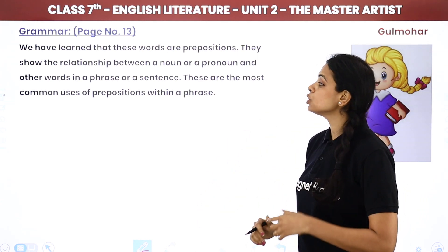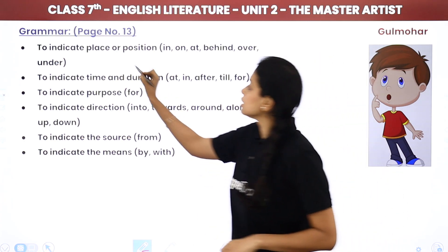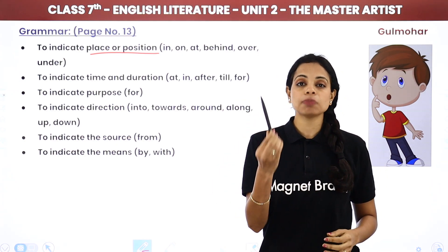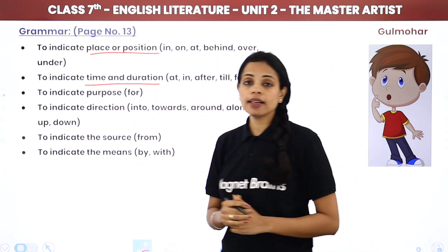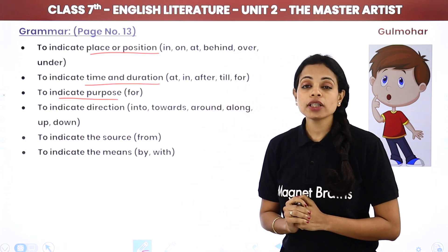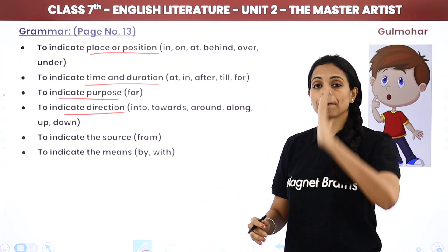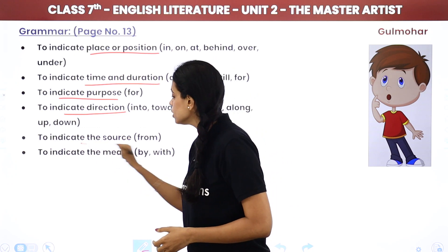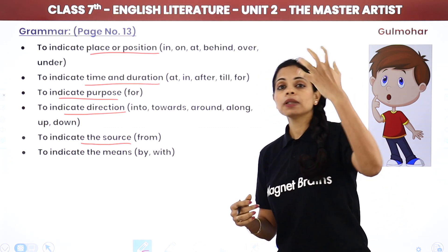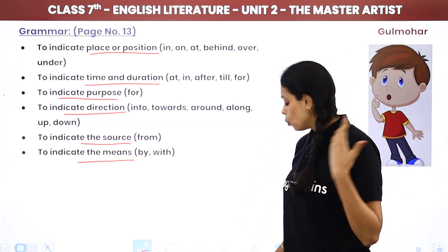The most common uses of prepositions are: to show place or position — such as 'in my hand' or 'on my hand'; to show time or duration — such as 'at nine o'clock' or 'on the ninth of November'; to show purpose — such as 'I cannot come for I have my exams'; to show direction — such as 'towards,' 'into,' 'upon'; to indicate the source — such as 'from Bhopal' or 'from the bucket'; and to indicate means — such as 'I'll come by my car' or 'with someone.'